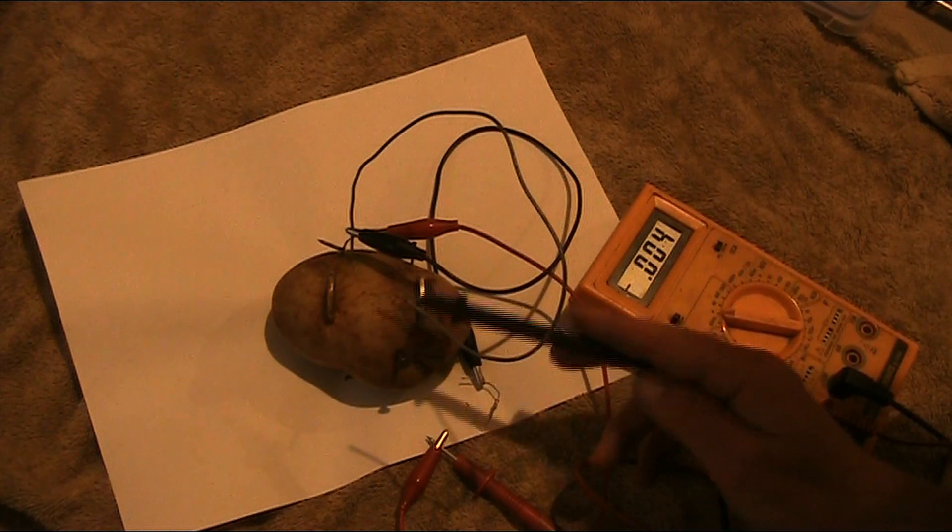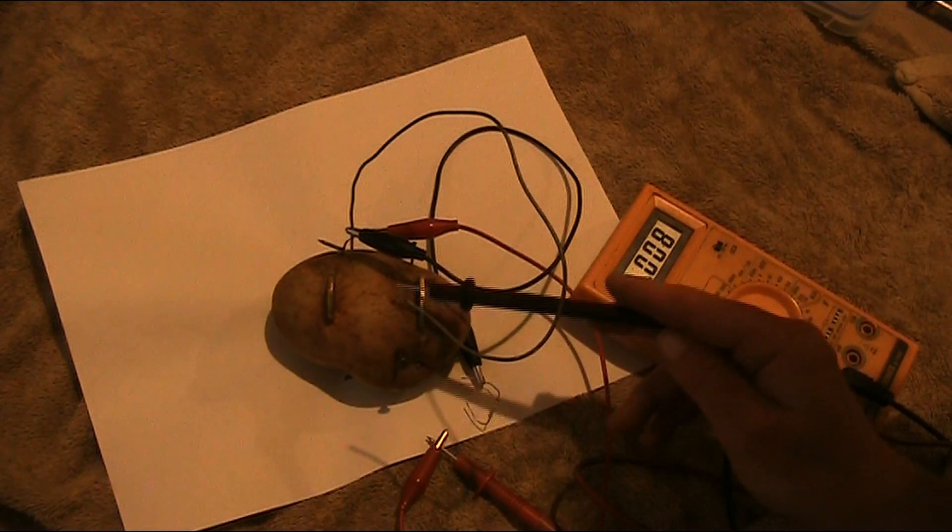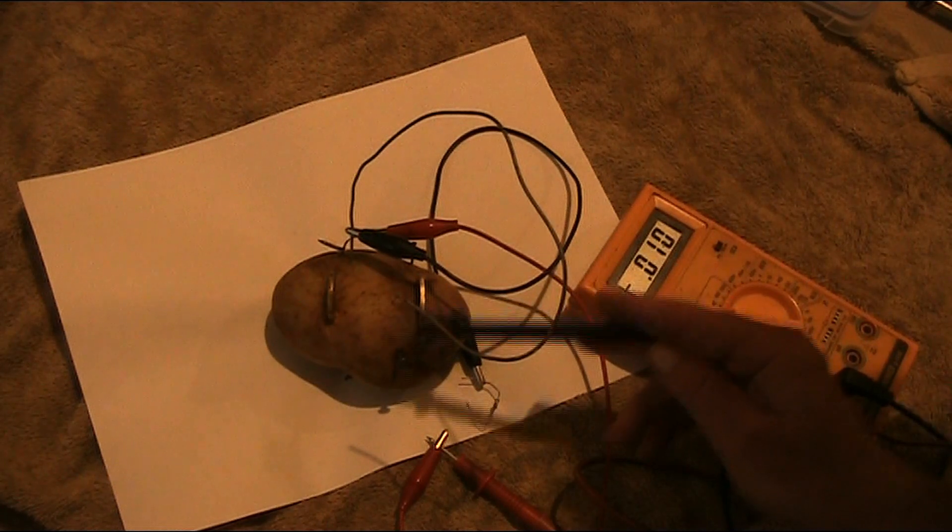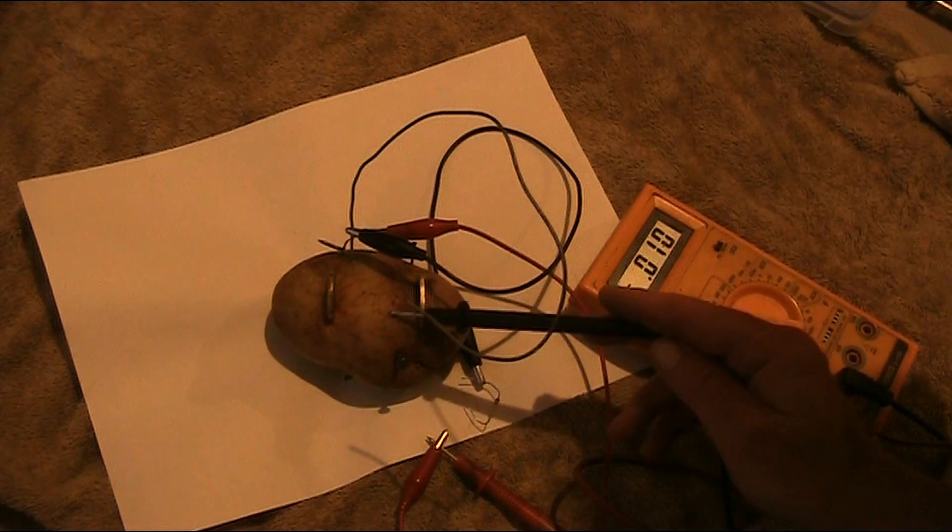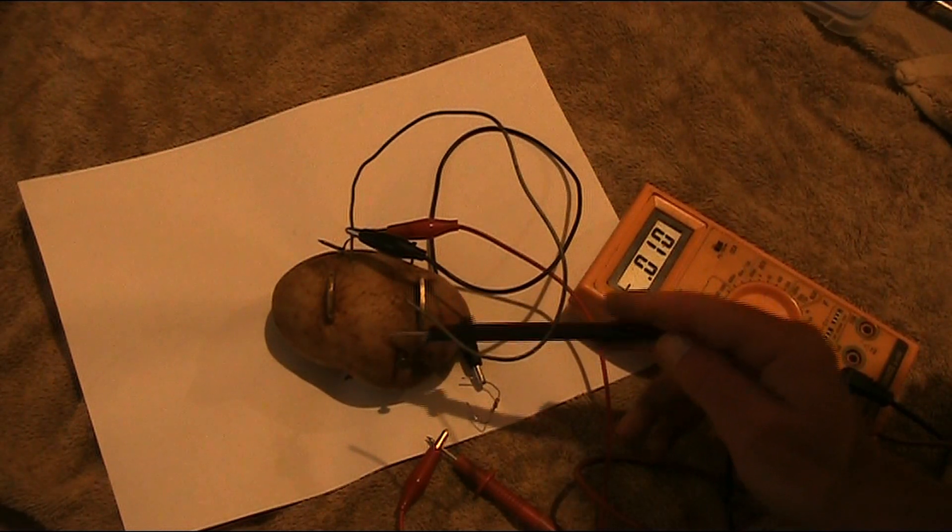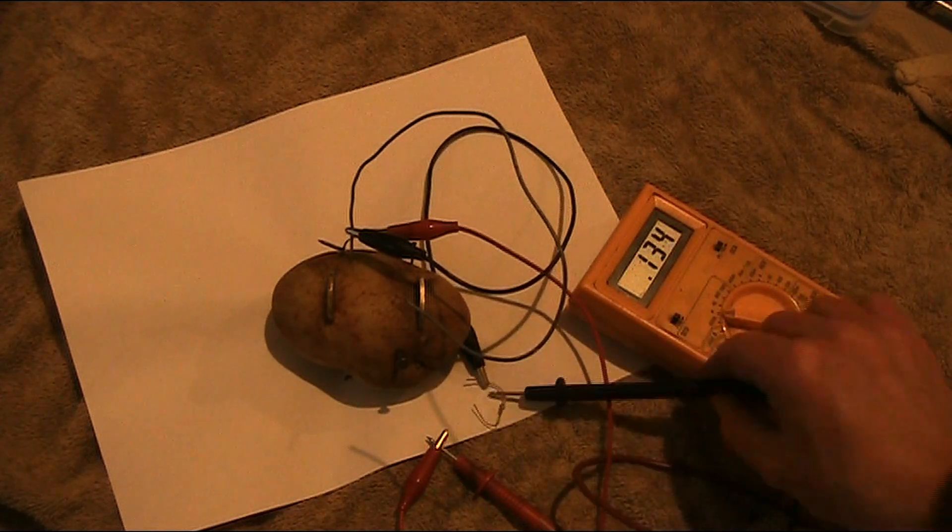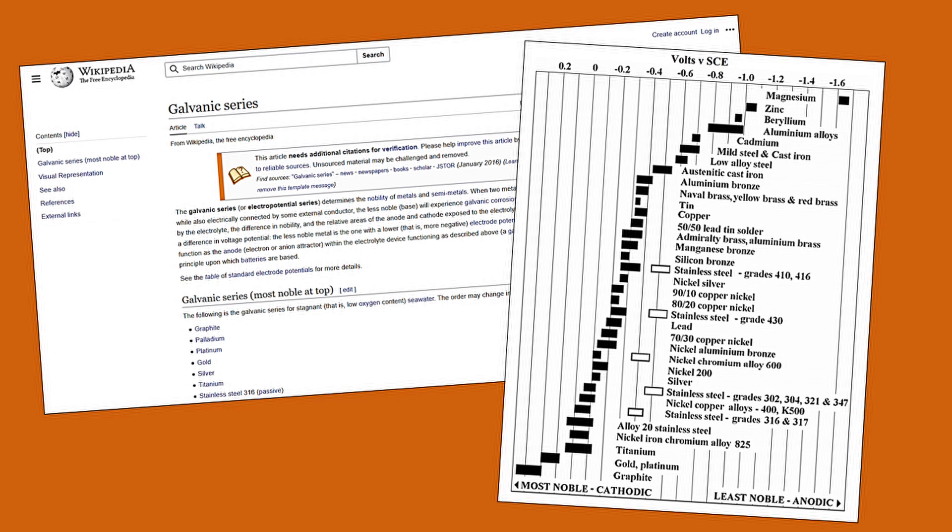If you want to learn more about this, look up tables of galvanic or electropotential series of metals. Basically, the more noble metals are cathodic and the least noble metals are anodic. Cathode being negative and anode being positive. And if you have metals that are as far as possible on the chart, then that will give you the highest potential difference.